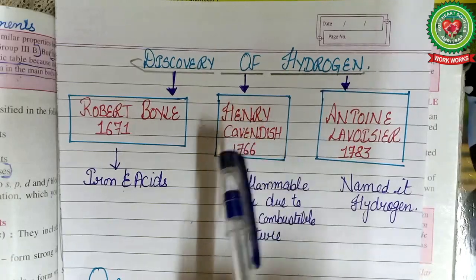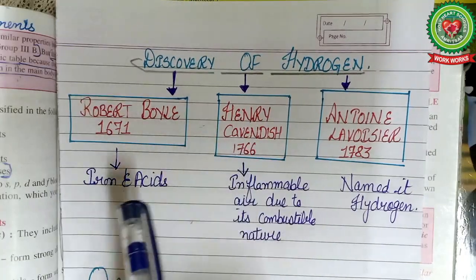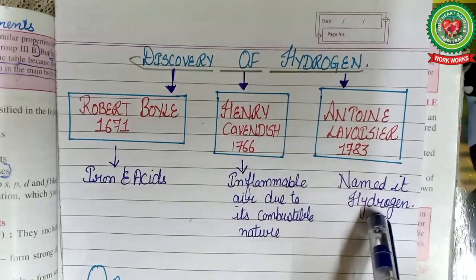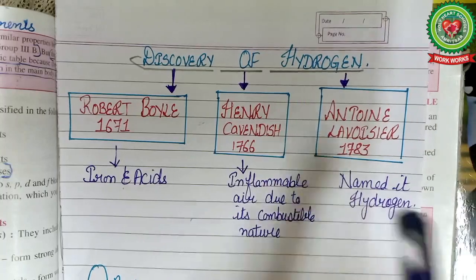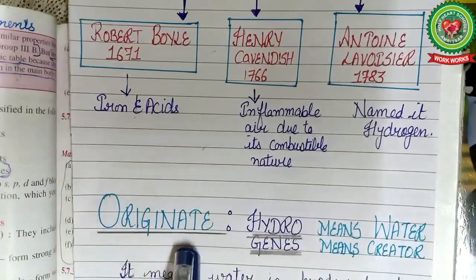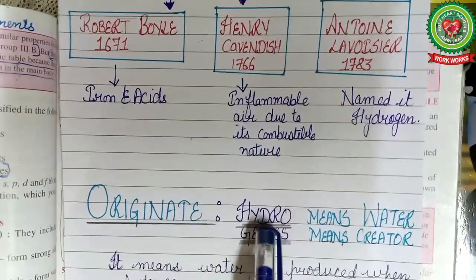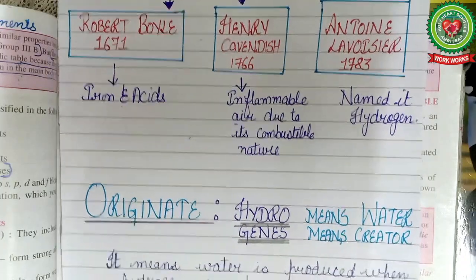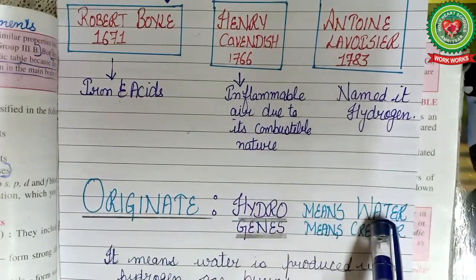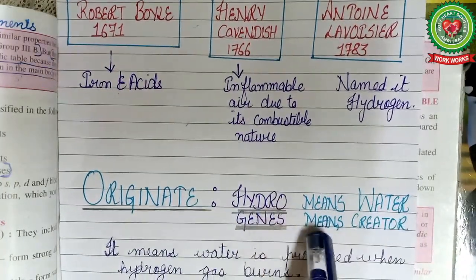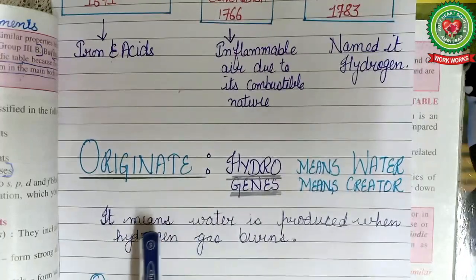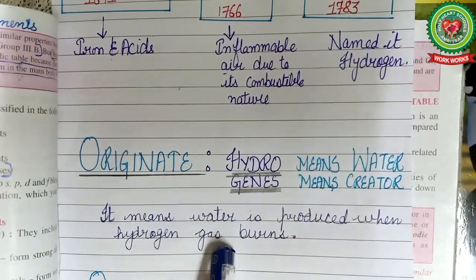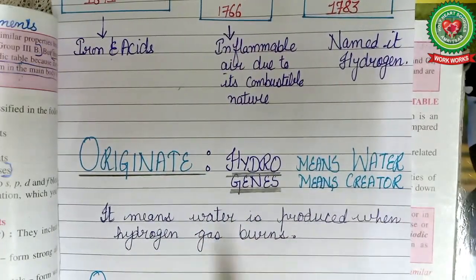In 1783, Antoine Lavoisier named the gas hydrogen. The name hydrogen originates from the Greek words 'hydro,' meaning water, and 'genes,' meaning creator — because water is produced when hydrogen gas burns.